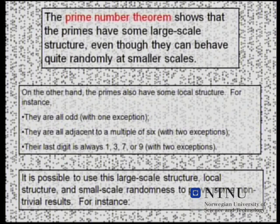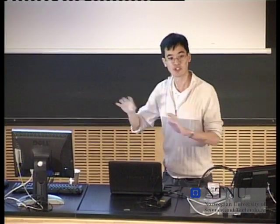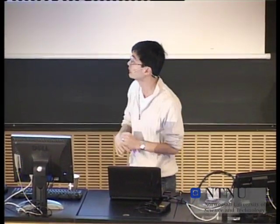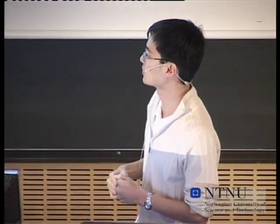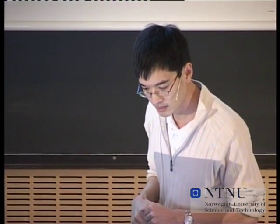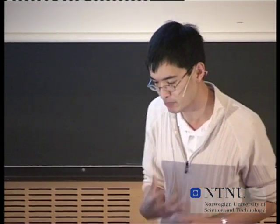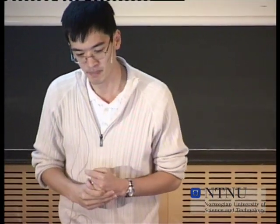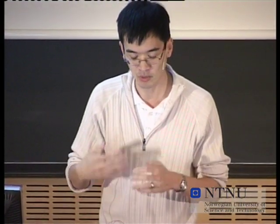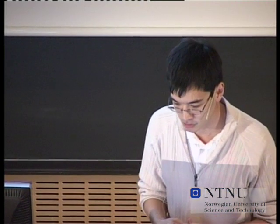So the primes contain three different features that interact with each other. On the one hand, they have this large-scale structure — a uniform density, so we know roughly how many primes are in a given box. We have this local structure, meaning there are certain lines with no primes in them. But other than that, they look random, so they should be distributed randomly. Actually, proving that they're distributed randomly is really quite tough. But those are the three features of the primes that somewhat control the behavior, and we understand each of these facts separately to some extent, and how they interact.